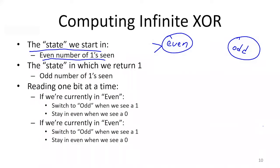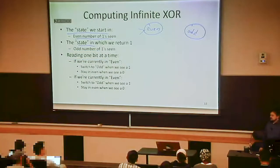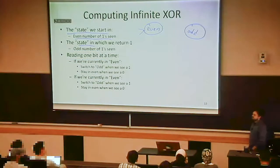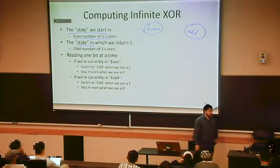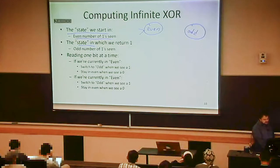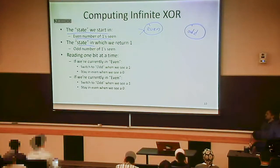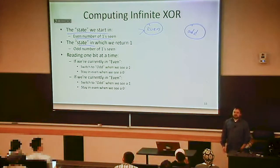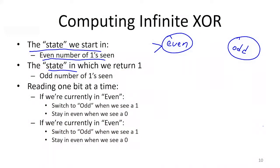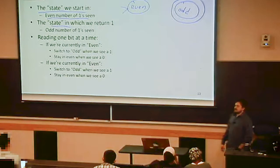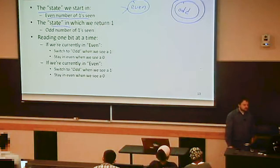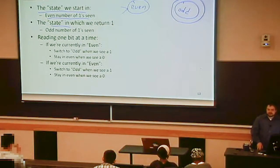The next thing we want to do is figure out which state or states represent that your answer should be one. We want to return one for this function whenever we've seen an odd number of ones. So the odd state is the one where, after reading the whole string, if we've seen an odd number of ones, we want to return one. We denote a final state by double-circling it. Double-circled states are the ones where we return one; any single-circled state means we return zero.